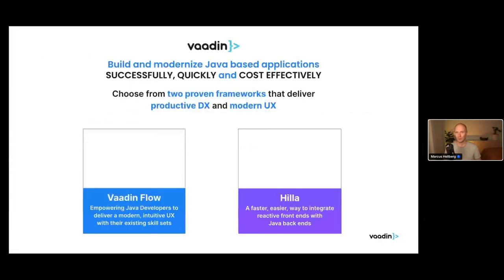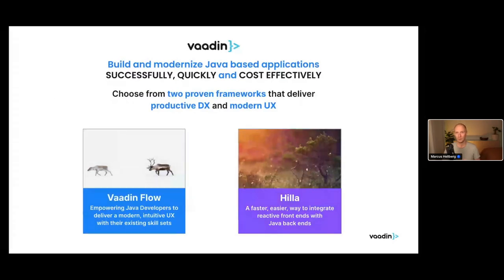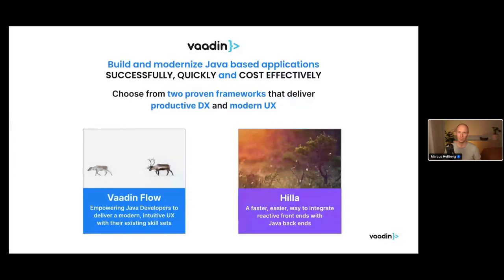If you are new to Vaadin and haven't heard of it before, I just wanted to give you a really quick overview of what we do as a company. We help folks on Java build really great web apps. For that, we have a huge library of UI components — all the different building blocks you need, ranging from tiny things like buttons and text fields all the way up to bigger components like data grids, editors, and menus. We have two frameworks: Vaadin Flow, where you build your entire UI in Java, and Hilla, a newer framework launched last year using a Spring Boot backend with a reactive TypeScript front end.